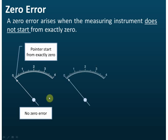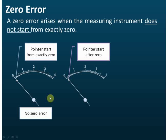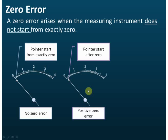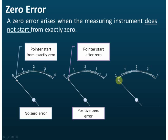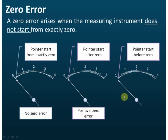But sometimes you will find that the pointer does not start from exactly zero — it's slightly higher than zero, or after zero. In this case, we say it has a positive zero error. If the pointer is slightly lower than zero, we call this a negative zero error.